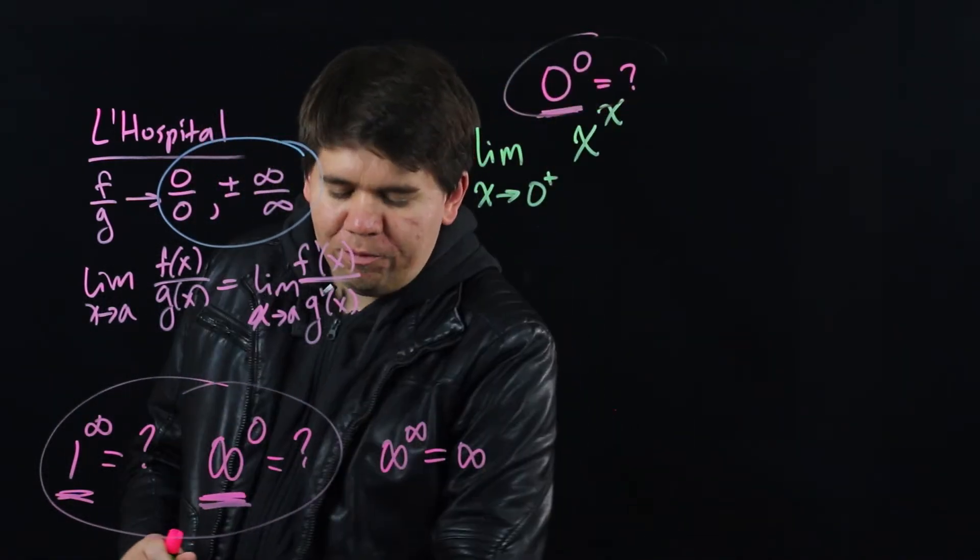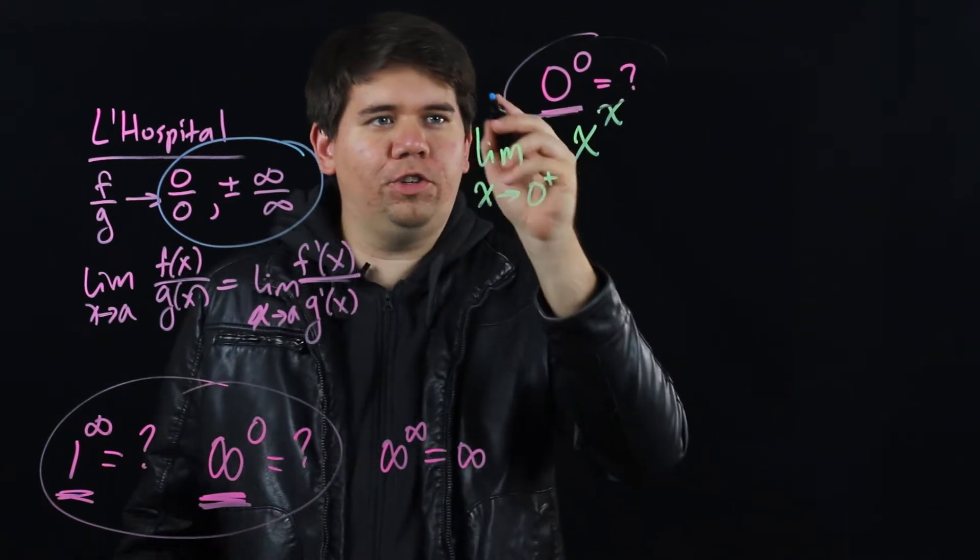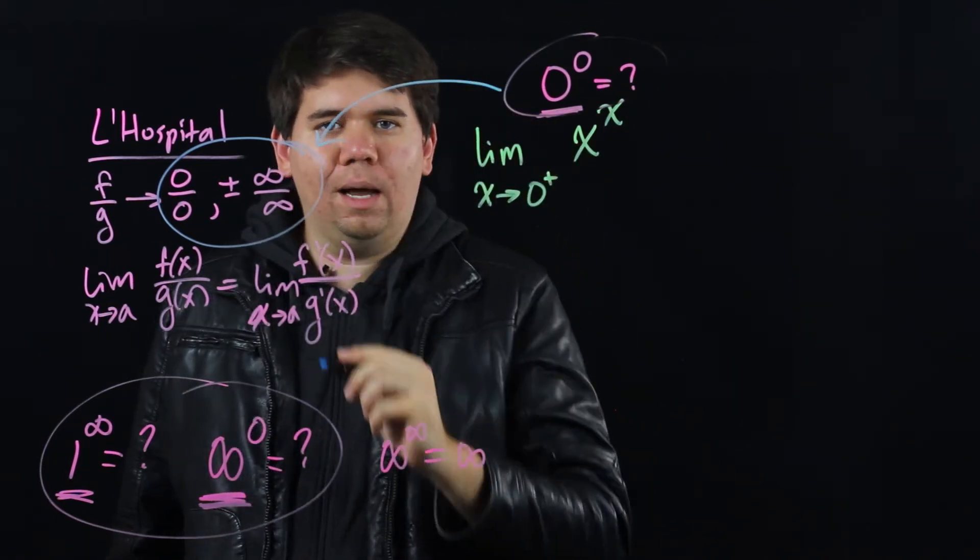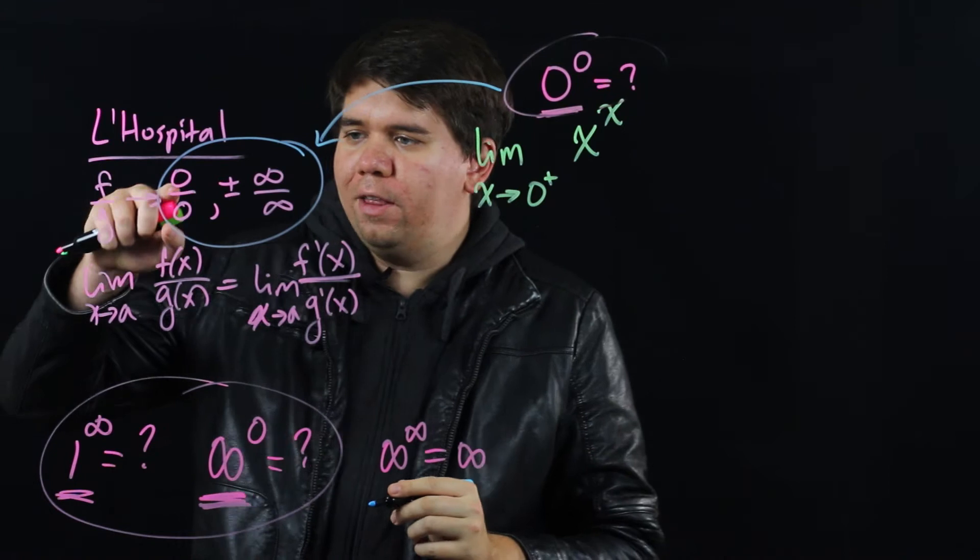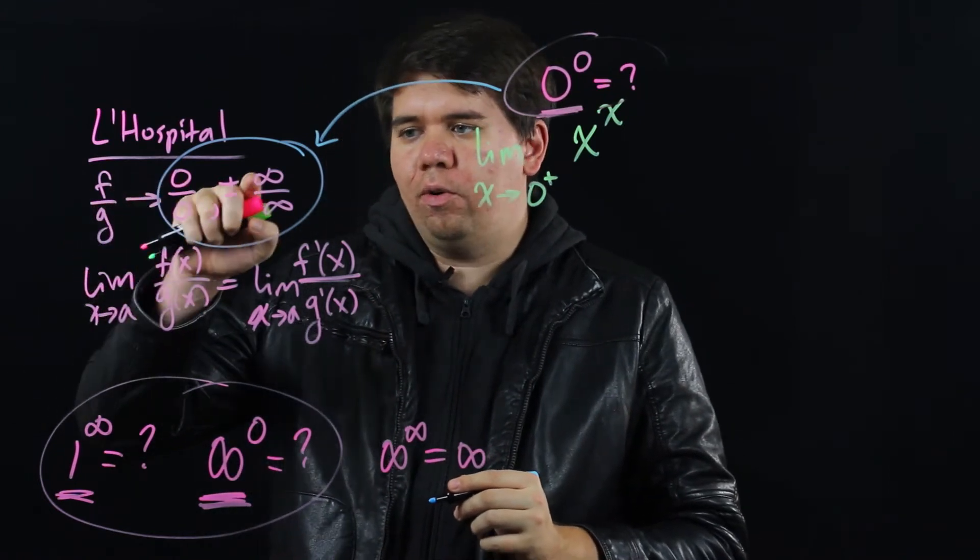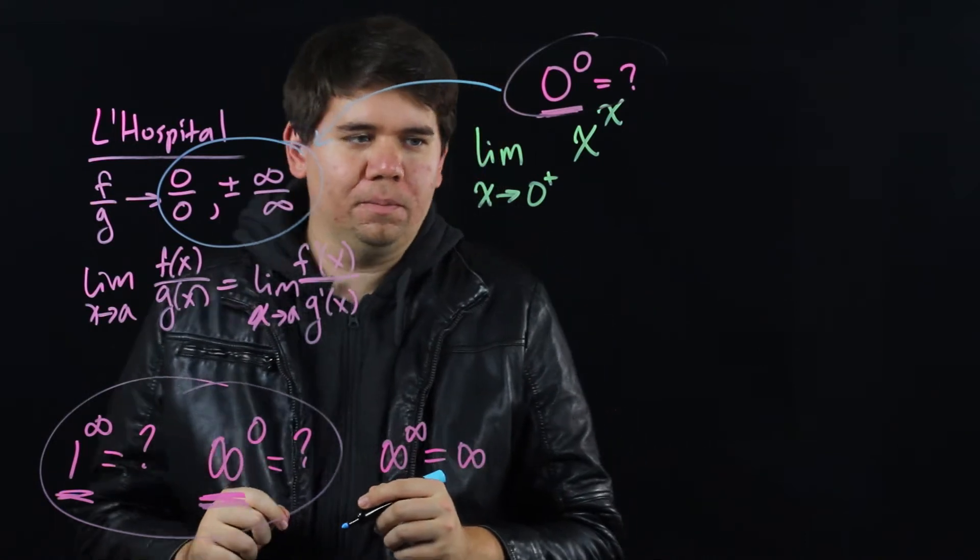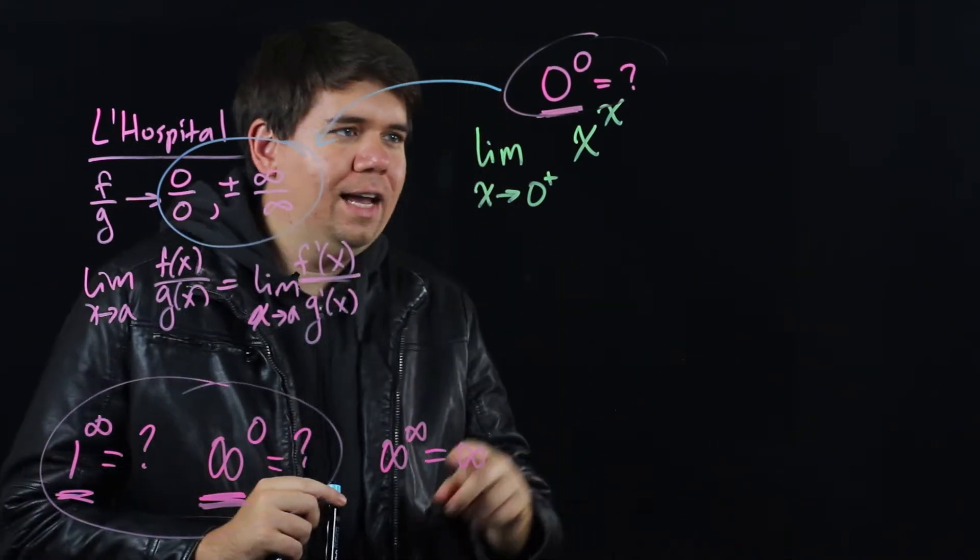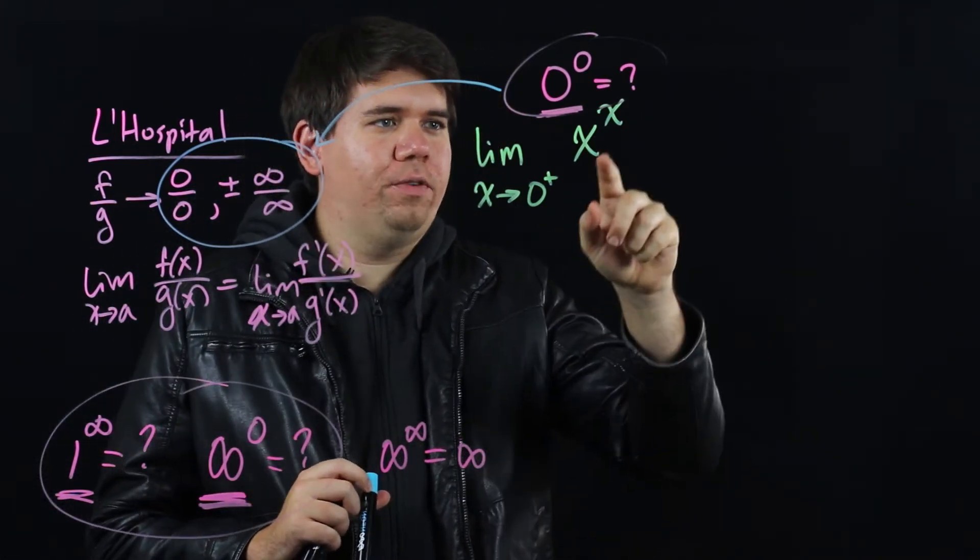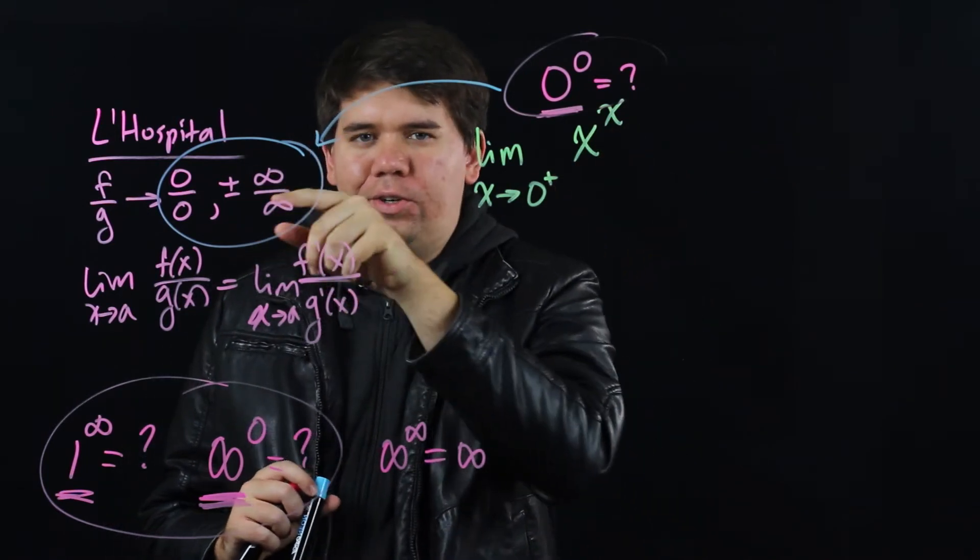And remember the name of the game for us is whenever you have an indeterminate form, we want to find some way to move it to either the form 0 over 0 or infinity over infinity. So we can apply L'Hopital's rule. Okay. How can I change this from a power into a fraction?